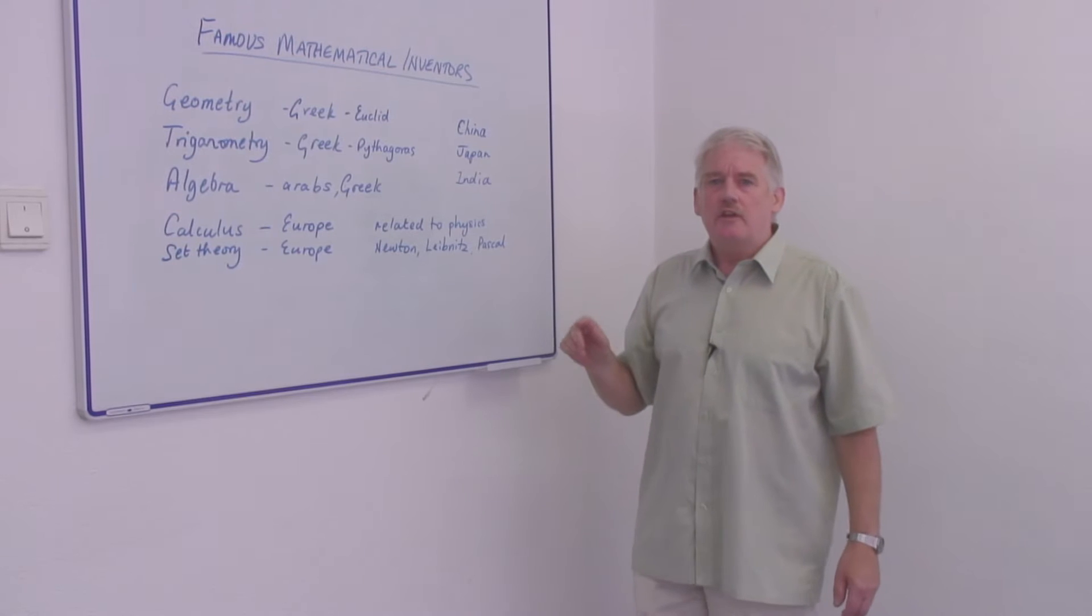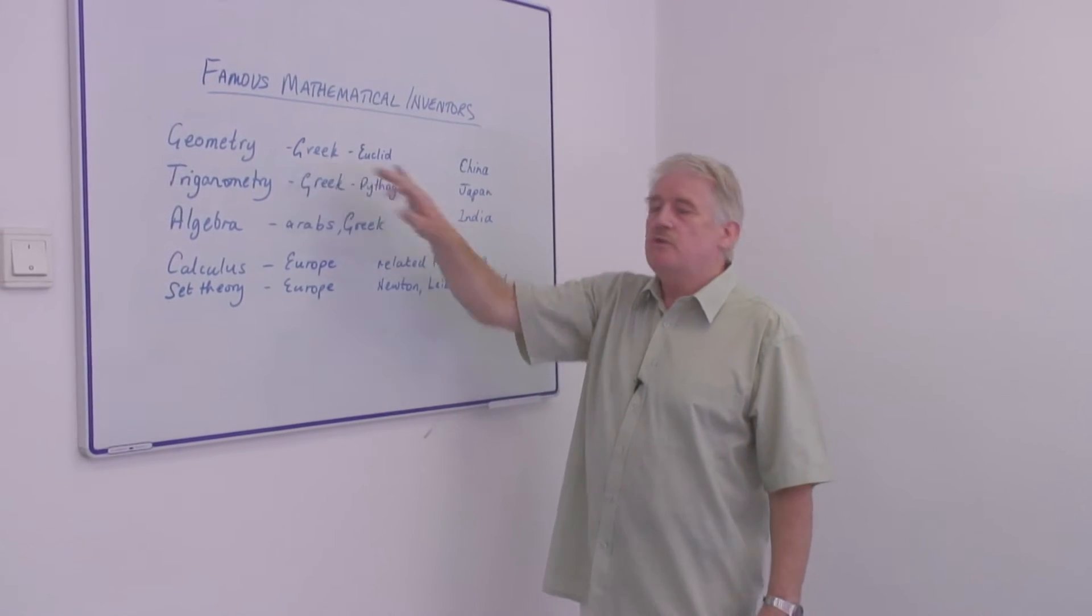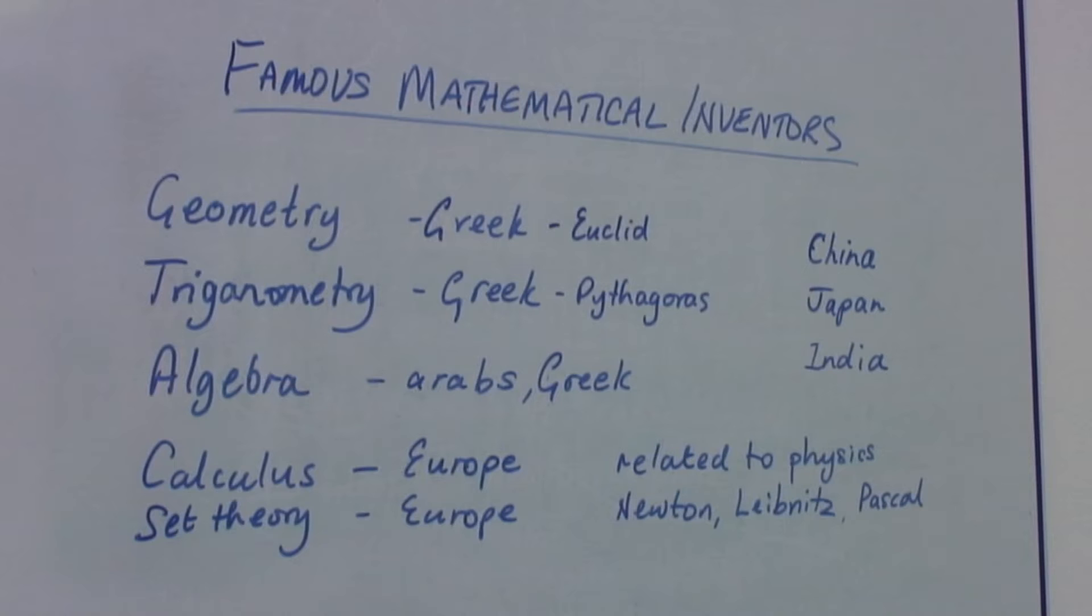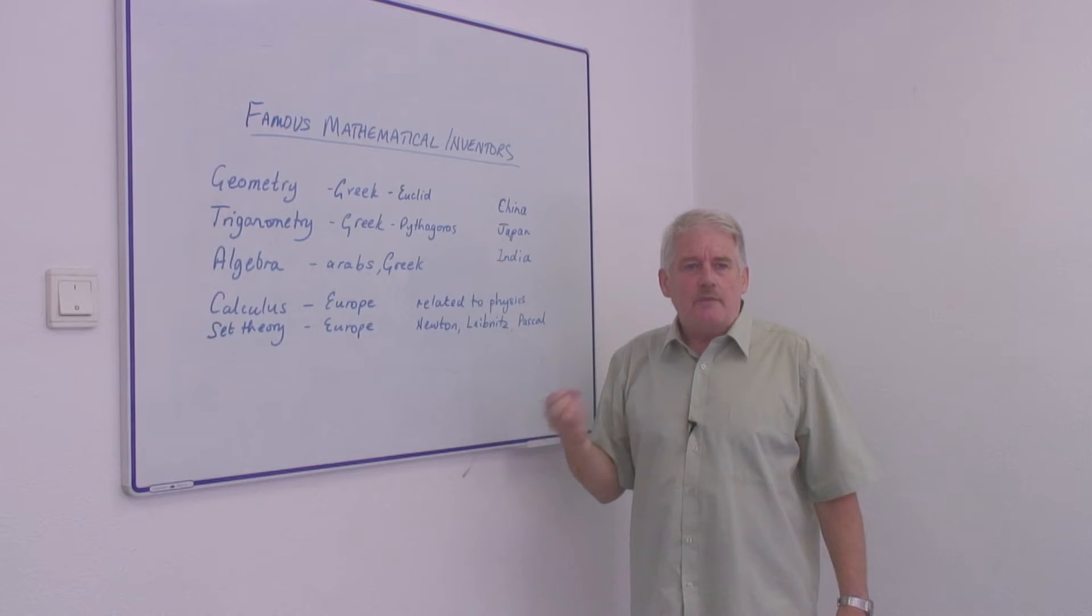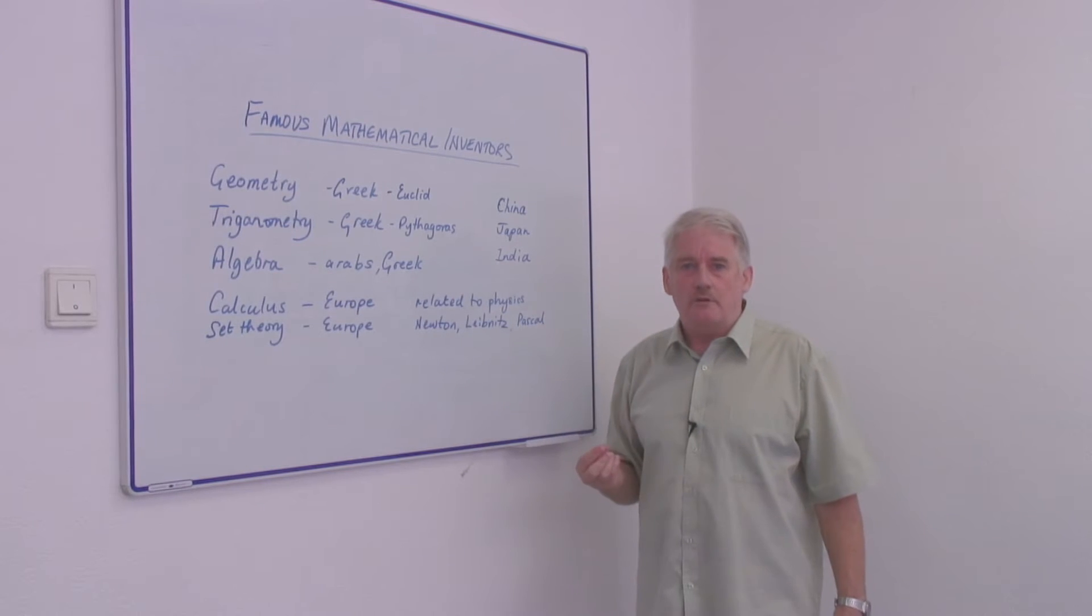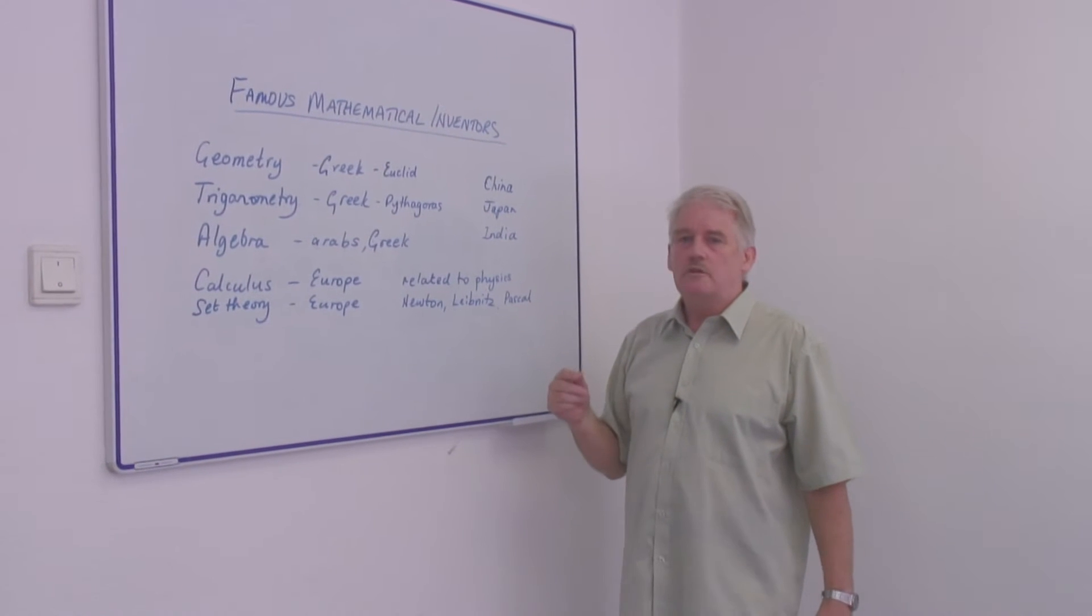Some of the earliest development was in geometry and this we know from the Greeks. Euclid was very famous with his theoretical geometry. This was a very important development.